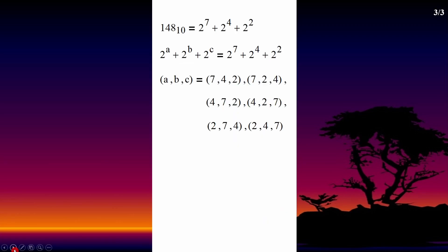Therefore, the 6 answers for a, b, c are: 7, 4, 2 or 7, 2, 4 or 4, 7, 2 or 4, 2, 7 or 2, 7, 4 or 2, 4, 7.